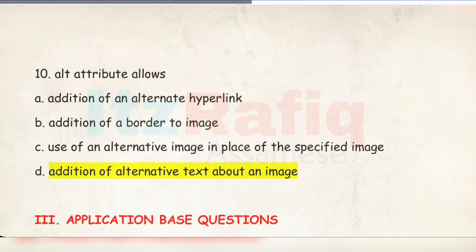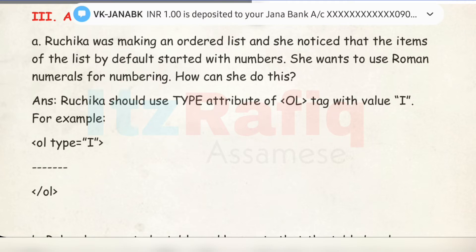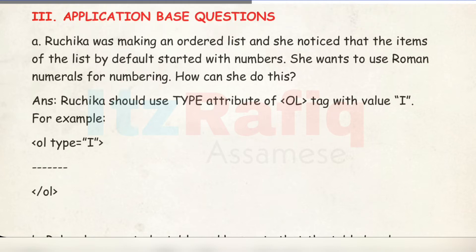Now, application-based questions. Number A: The attribute of the ol tag with value 'i' — for example: ol type="i" — is used to display ordered list items in lowercase Roman numerals.